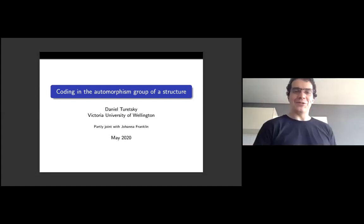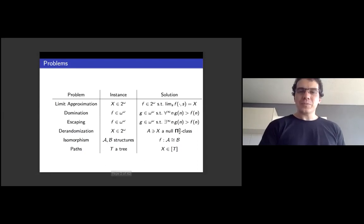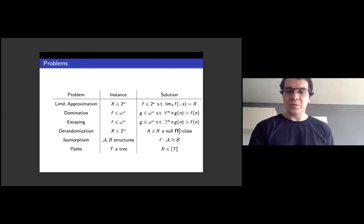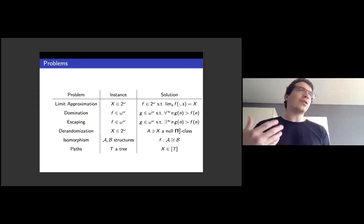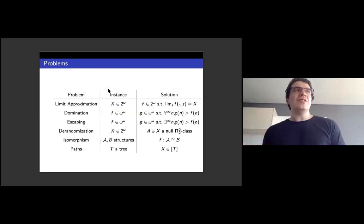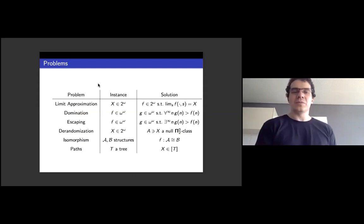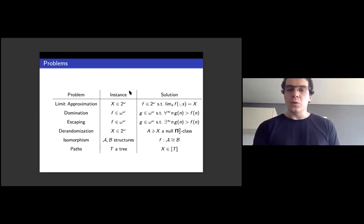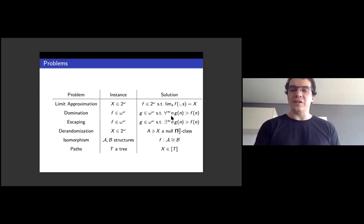It'll be a meandering path before I get to the result. One thing I've found productive is thinking about problems which have instances and solutions — both things that can be coded by reals, so these are binary relations on the reals. For example, limit approximation: an instance is a real and a solution is a sequence converging to that real. Or domination: an instance is a function and a solution is another function that dominates the first. Escaping: an instance is a function, a solution is another function that escapes it.